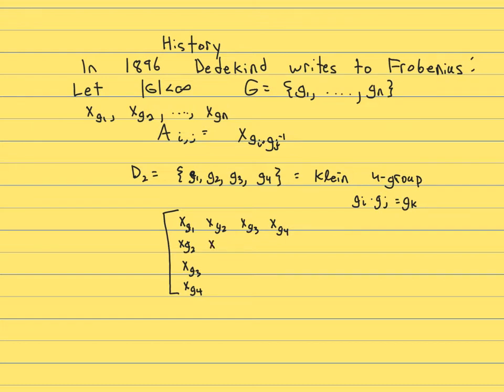Second row, g2 squared is the identity element, g2 times g3 is g4. And by symmetry there are typos already. Not surprisingly, that should be g4 and that should be g2. And so there's our matrix.